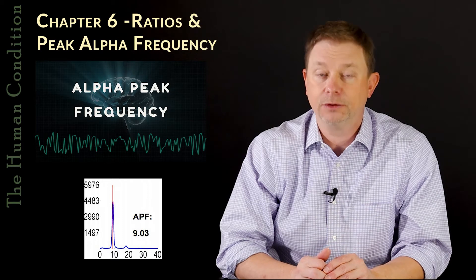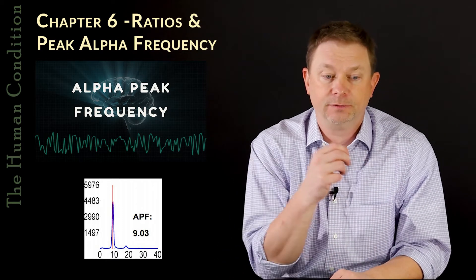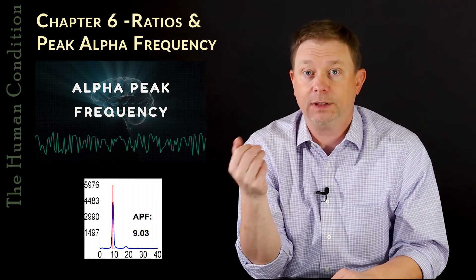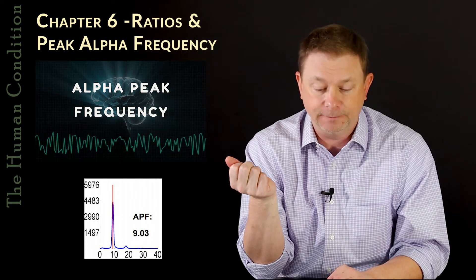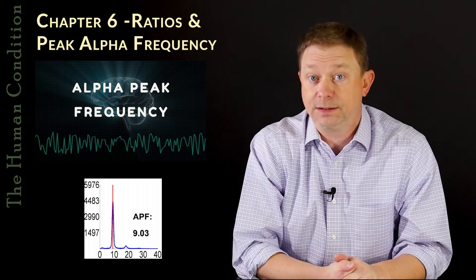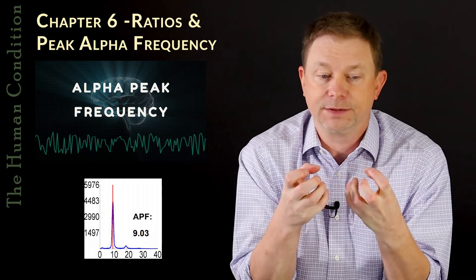So alpha peak frequency is a measure of the brain's flexibility. It's a measure of the ability for a person to be flexible and learn new things. And it's one of the most studied parts of the human brain.